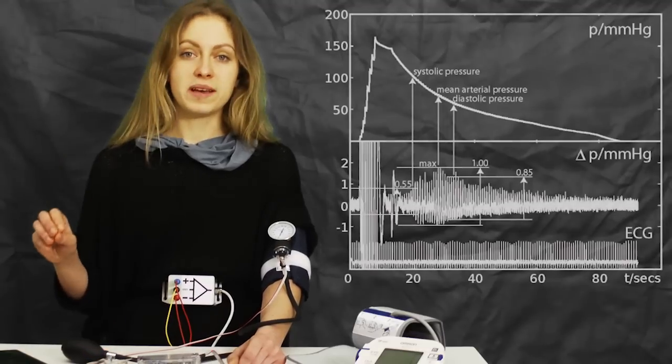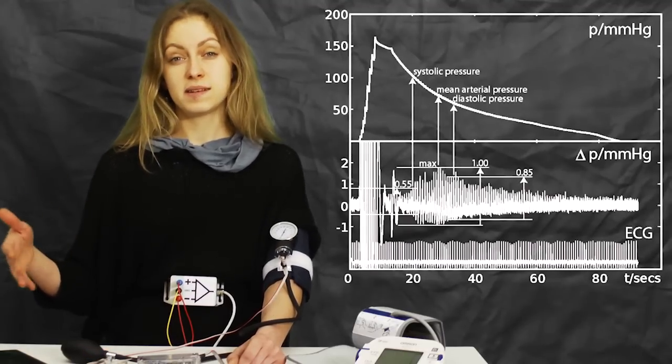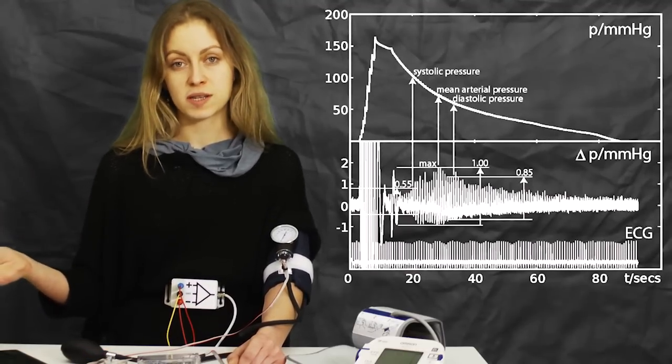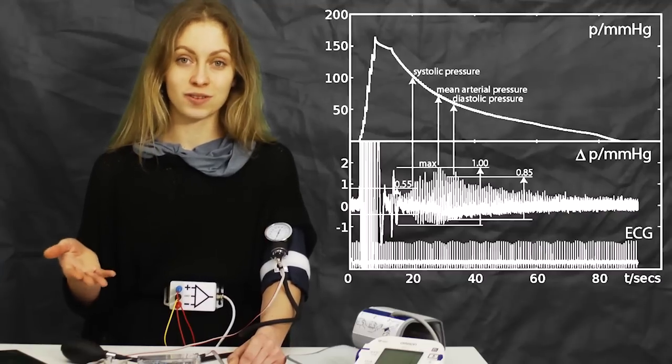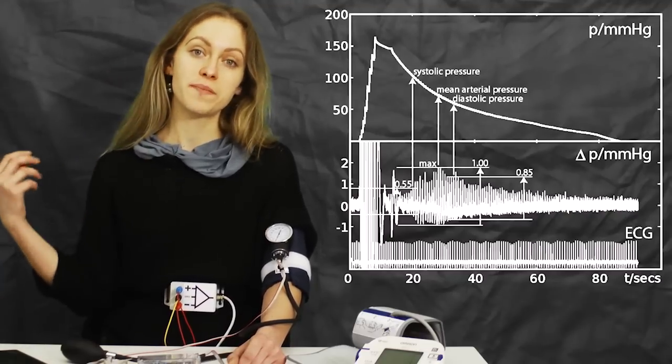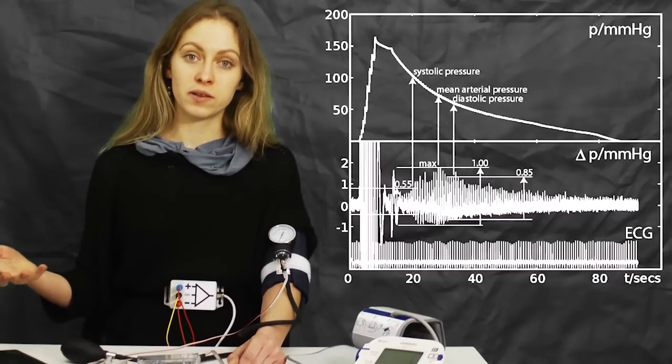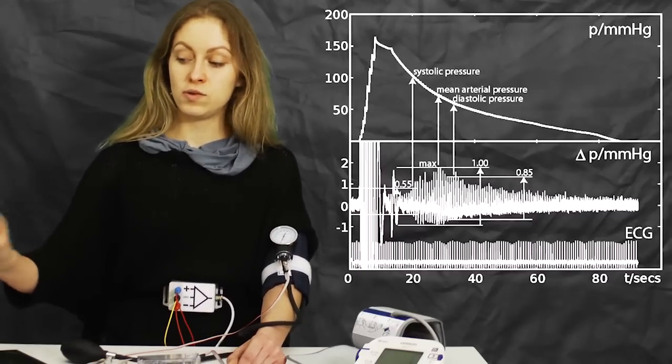However, the problem is that the constant appearance and disappearance of these small pressure changes doesn't really help us determine our systolic and diastolic blood pressure, so we would have to calculate those using the raw data.